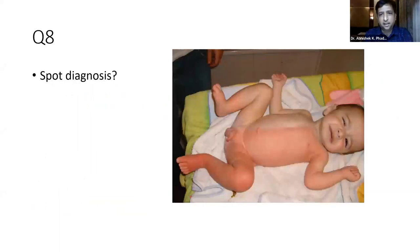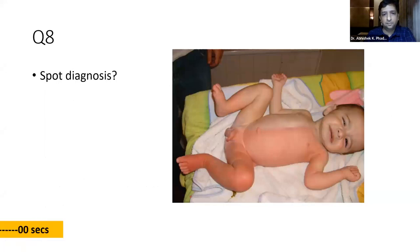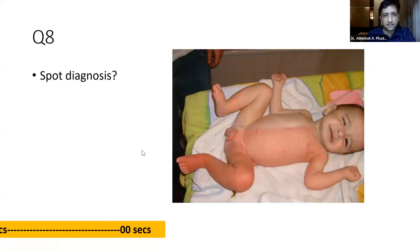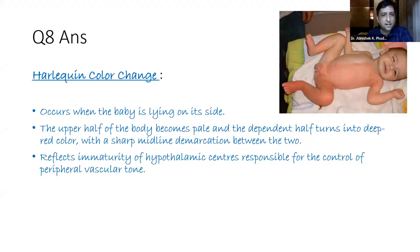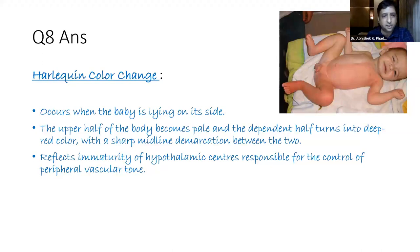Question 8: Spot diagnosis for the fellows — what is it? Quite a few have answered correctly: harlequin color change. This usually occurs when the baby is lying on its side. The upper half of the body becomes pale and the dependent half turns deep red, with a sharp midline demarcation between the two. It reflects the immaturity of the hypothalamic centers responsible for controlling peripheral vascular tone. All these skin changes are very important; refer to the IEP color atlas for OSCE purposes.